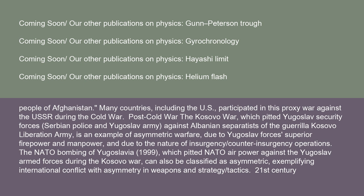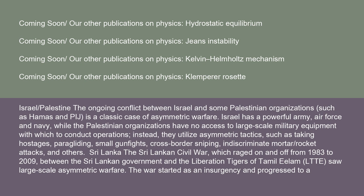In the 21st century, the ongoing conflict between Israel and Palestinian organizations such as Hamas is a classic case of asymmetric warfare. Israel has a powerful army, air force, and navy, while Palestinian organizations have no access to large-scale military equipment. Instead, they utilize asymmetric tactics such as taking hostages, paragliding, small gunfights, cross-border sniping, and indiscriminate mortar and rocket attacks.